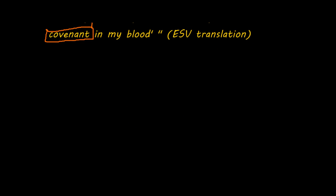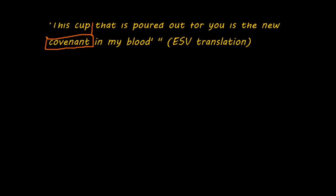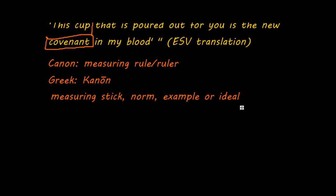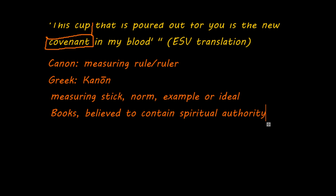The second word I want to discuss is the word canon. We've already seen this word in the last video, where I used the word deutero-canonical. Canon comes from the Greek word kanon — it's a long O, that's why I put a little stripe on top of the O. A canon was actually a reed or a measuring stick or a rule or a ruler, but the word could also mean ideal or example. The canonical books are basically books that are believed to possess spiritual authority. In this sense we have a canon of the Old Testament and a canon of the New Testament.